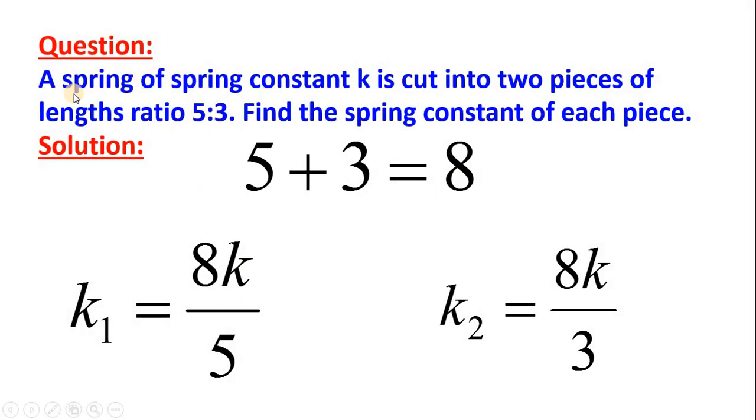Suppose the question is like this. A spring of spring constant K is cut into two pieces of length ratio 5 is to 3. Find the spring constant of each piece. Now look at this ratio 5 is to 3. 5 plus 3 is equal to 8. Just add these two numbers 5 plus 3 is equal to 8. So, this 8 will come in the numerator and these 5 and 3 will be coming in the denominator.